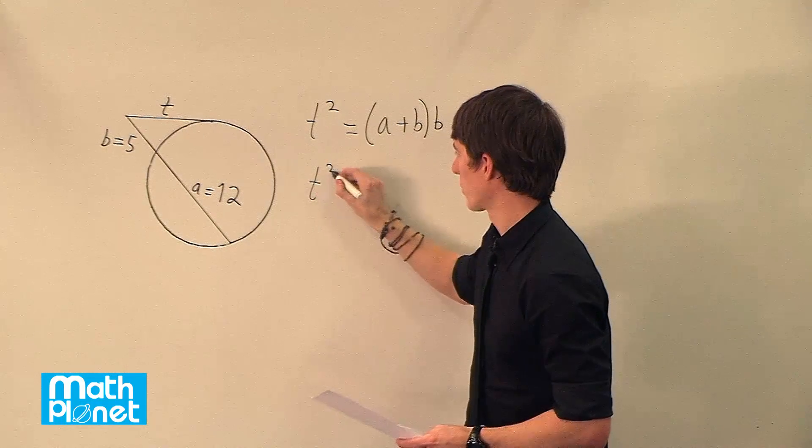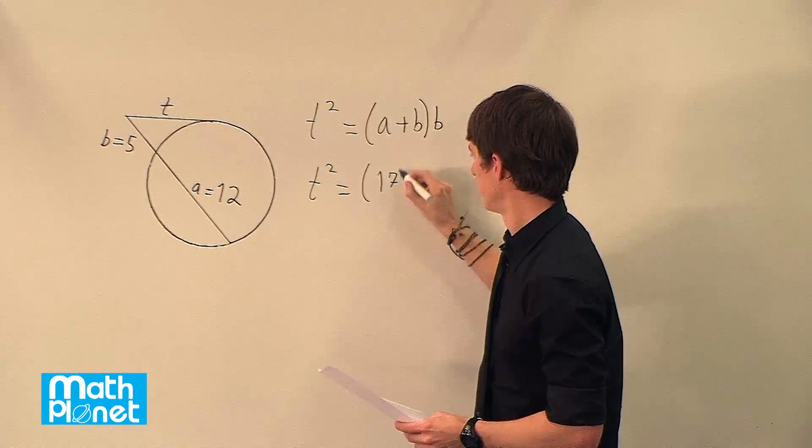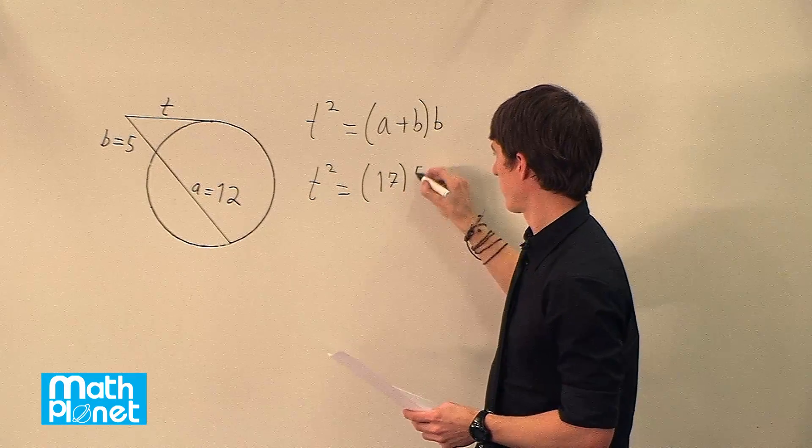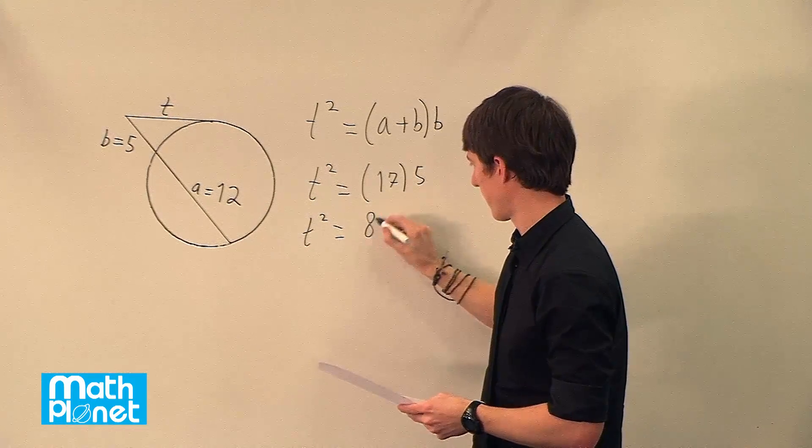So t squared equals 12 plus 5 which is 17 times b which is 5. So t squared equals 17 times 5 which is 85.